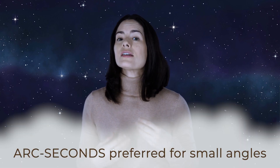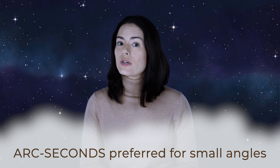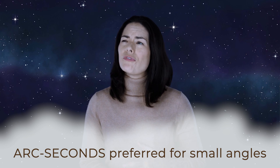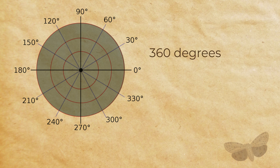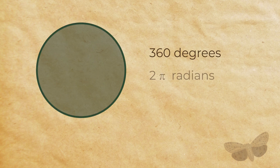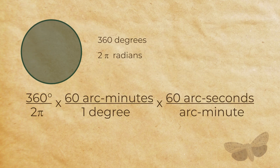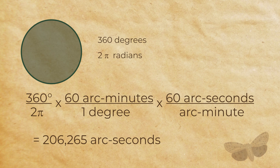You may be asking yourself, where does that 206,265 come from? This is how we get the units of alpha to be in arc seconds. Arc seconds are usually preferable to radians or degrees in astronomy, since we're typically dealing with very distant objects and very small angles. Remember, there are 360 degrees in a circle, and the circumference is 2 pi radians. Each degree corresponds to 60 arc minutes, and each one of those minutes corresponds to 60 arc seconds, for a total of 1,296,000 arc seconds. Divide by 2 pi to get 206,265.